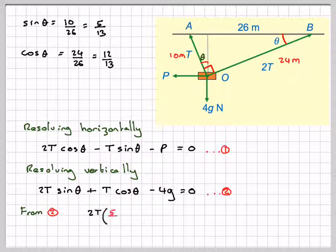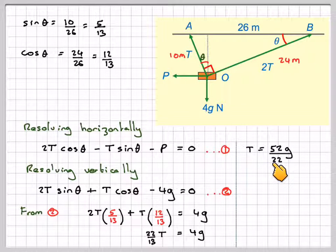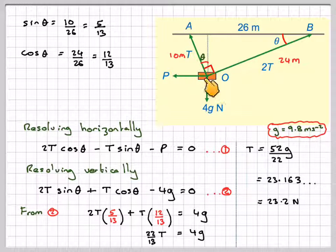And then from equation 2 we can say that 2T times sin θ, which is 5 over 13, plus T times cos θ, which is 12 over 13, is going to be equal to 4g. Collecting this up will give me 2 times 5, which is 10 plus 12, which is 22 over 13. Lots of T equals 4g, therefore T will be equal to 13 times 4, which is 52g over 22. g is 9.8 metres per second squared, so we get 23.163 Newtons as the value for T.